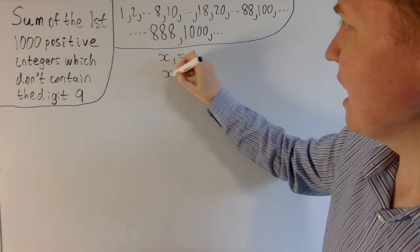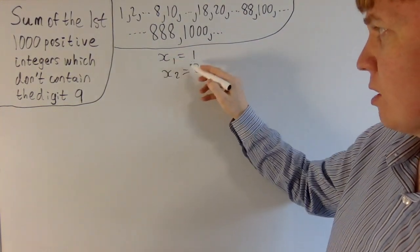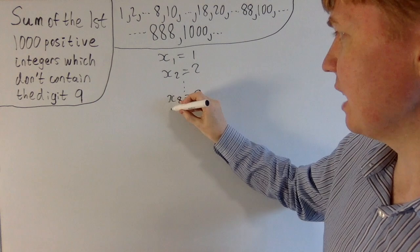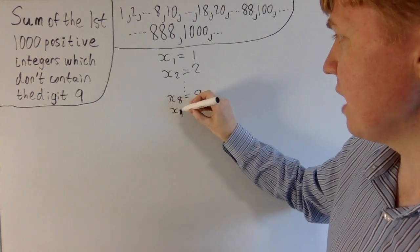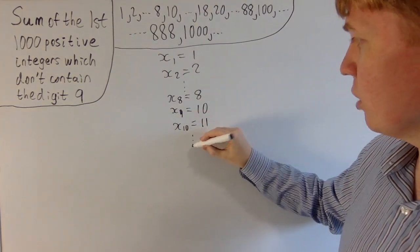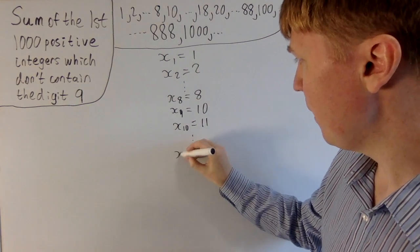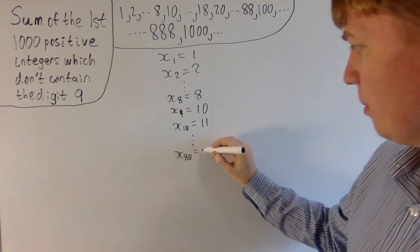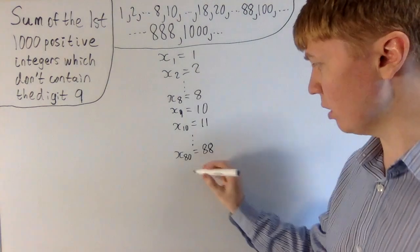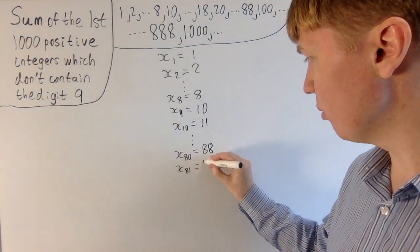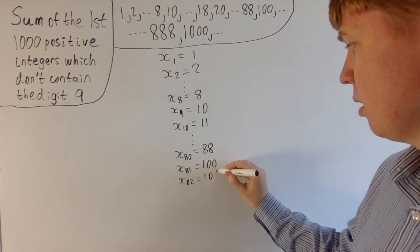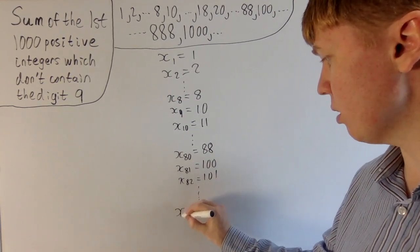There's a really nice approach we can use here. So if I write x₁ is 1, x₂ is 2, just the first term in our sequence is 1, the second term in our sequence is 2. So if we skip down to x₈ is 8, then the ninth term in our sequence, x₉, is 10, then the next one, x₁₀, is 11. If I just include a few more that we can point out as well, by the time you get up to 88, you've had to skip 8 integers. So 88 is only the 80th number in your sequence, then x₈₁ we skip all the way up to 100, and x₈₂ is 101.